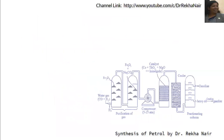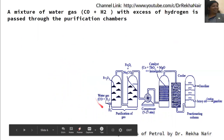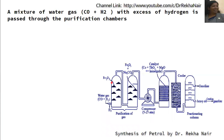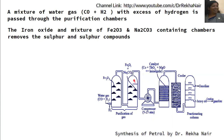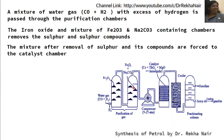A mixture of water gas — that is carbon monoxide and hydrogen with excess hydrogen — is passed through purification chambers. In the first chamber we have Fe₂O₃, and in the second chamber we have Fe₂O₃ and sodium carbonate. These two chambers help in the removal of sulfur and sulfur compounds.